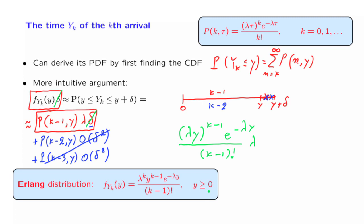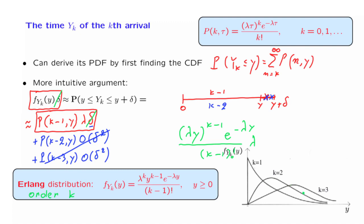The distribution we have derived is called an Erlang distribution — not just one distribution, but a family depending on k. For a particular k, we say we have an Erlang distribution of order k. When k equals 1, the k minus 1 power term and the factorial both disappear, and we're left with lambda times e to the minus lambda y — the exponential distribution derived earlier by a different method. As k increases, the distributions shift to the right, which makes sense: the time of the third arrival is likely to take higher values than the second arrival, and increasing k shifts the distribution further right.